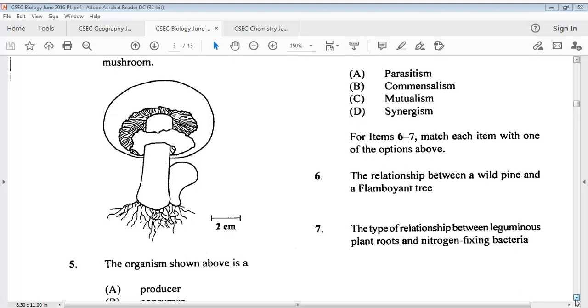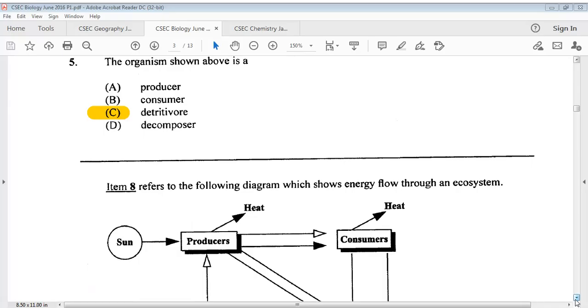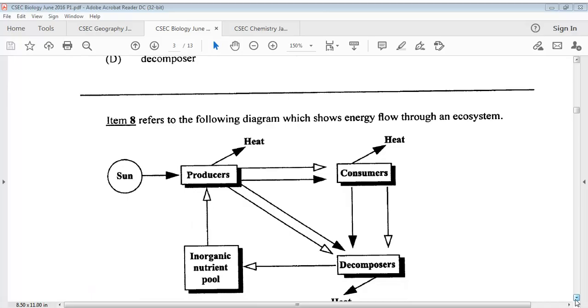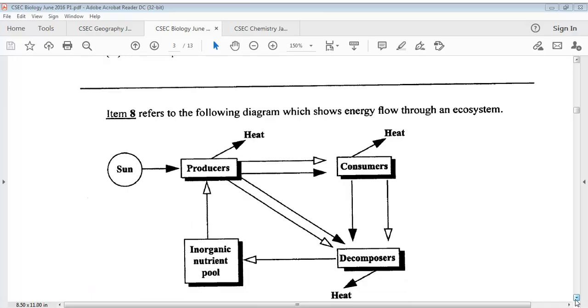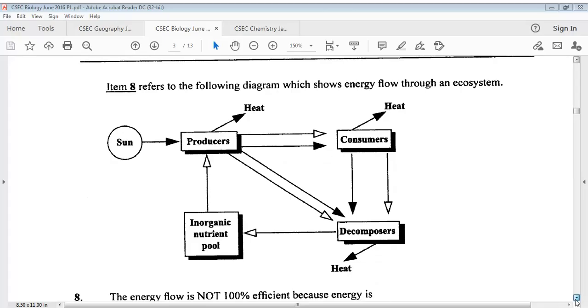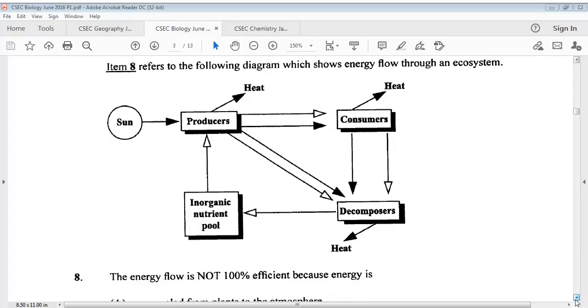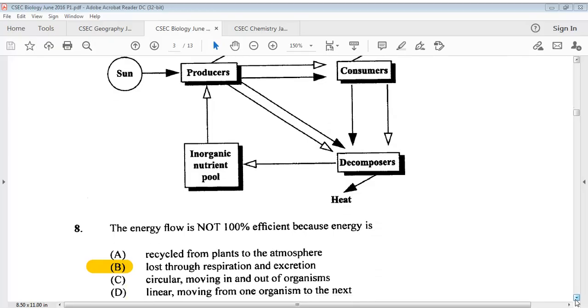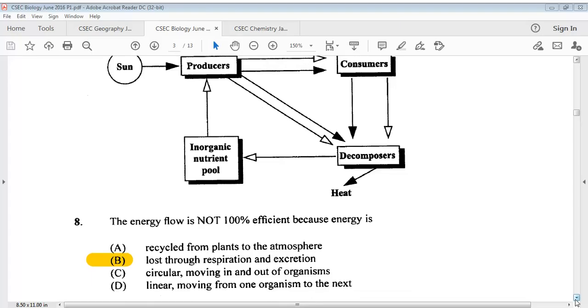For number 8, we have a diagram that shows the energy flow through an ecosystem. Question 8 says the energy flow is not 100% efficient because energy is. The answer is B, lost through respiration and excretion.